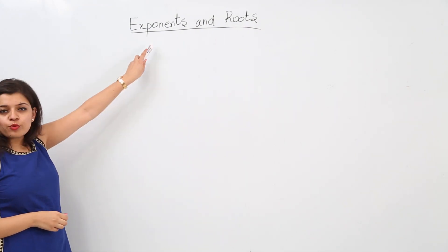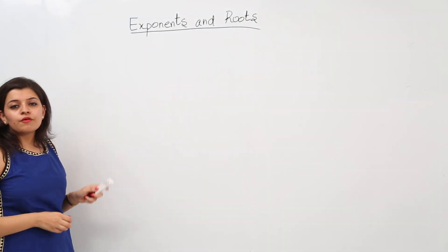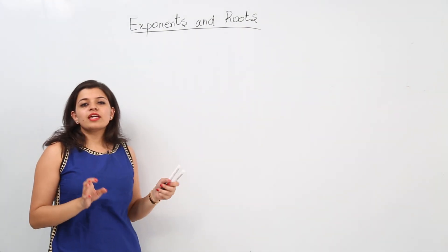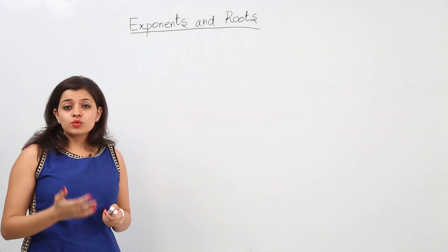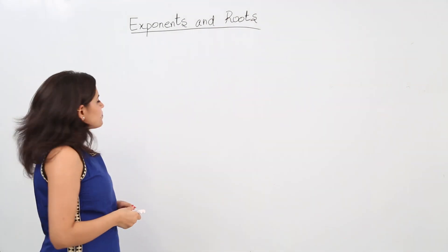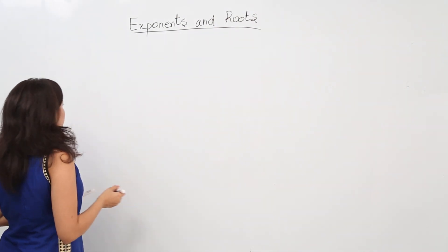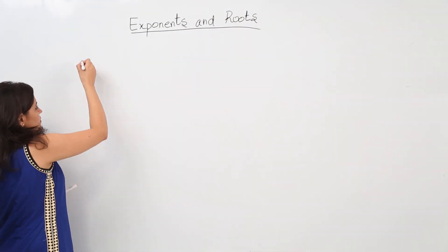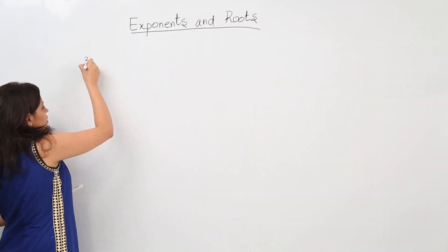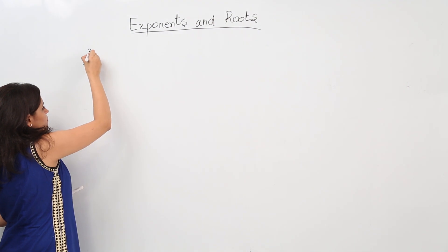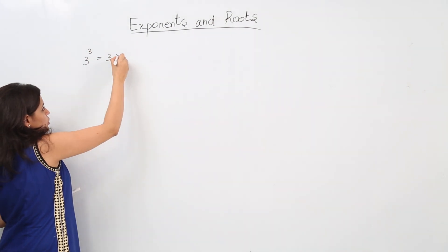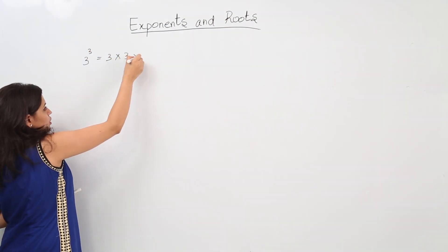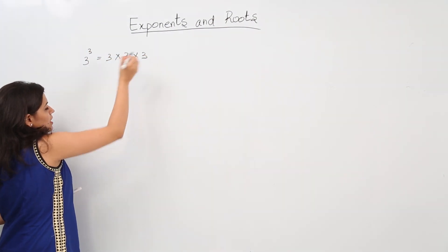Now let's see what an exponent is. Repeated multiplication of a number by itself is known as an exponent. For example, 3 raised to power 3 means 3 × 3 × 3.